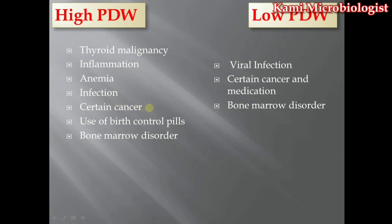Some cancers like leukemia, in which white blood cells get high, can also cause a high PDW ratio. The use of birth control pills — medicines that affect pregnancy — can also raise platelet amounts, causing high PDW. In cases of bone marrow disorder, since bone marrow produces blood cells, any disturbance in the bone marrow will affect and cause high PDW.